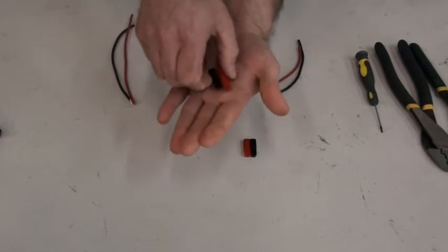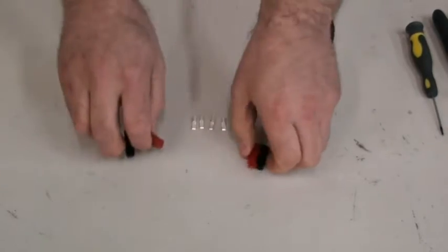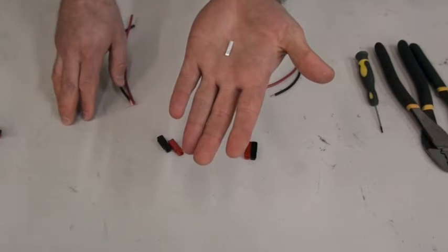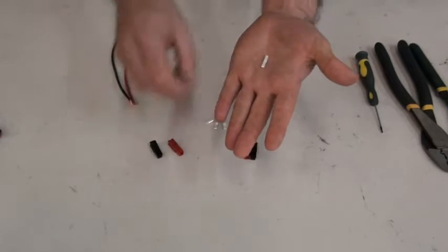These here, the red and the black, are called Anderson PowerPole housings. They snap together and you can connect them in different configurations. This is called an Anderson PowerPole contact - this is the part that goes on the wire and then into the housing. We're going to show you how that's done.